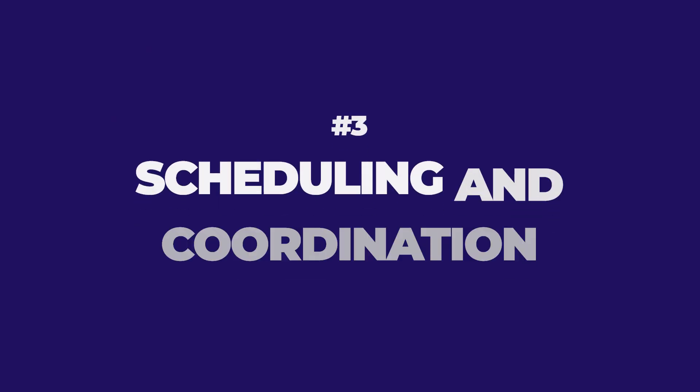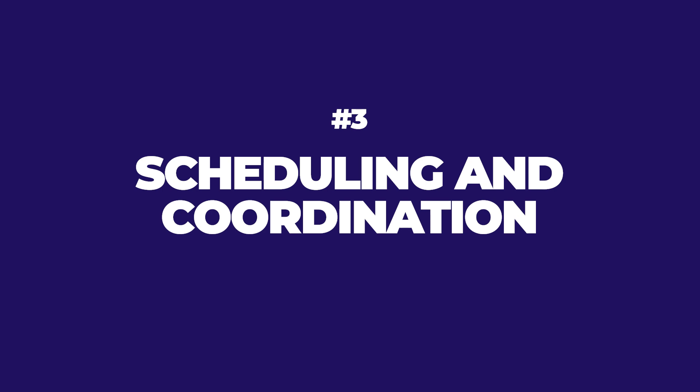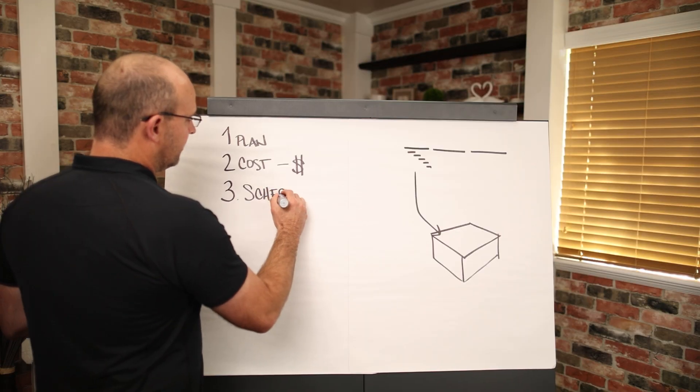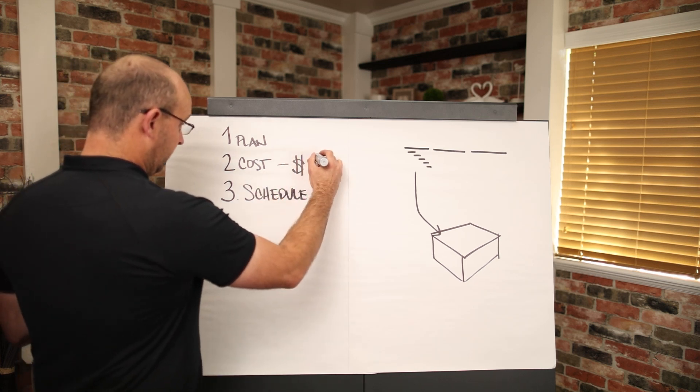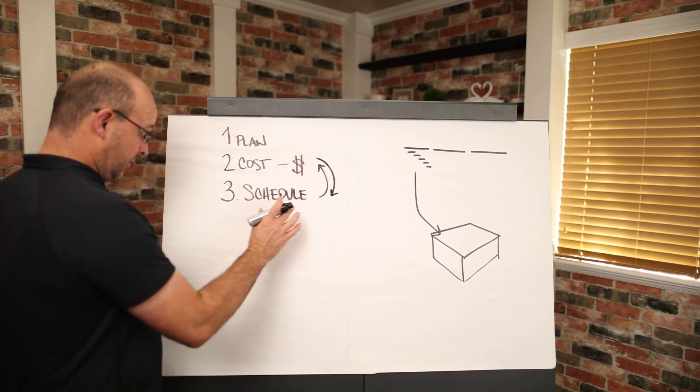Step number three is scheduling and coordination, okay? So if you have your plan and you have your budget, and these tie together by the way, you can only have the right budget if you know the schedule, right? And you can only have the right schedule if you know the budget.